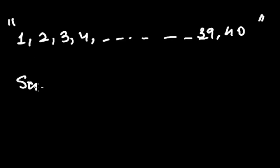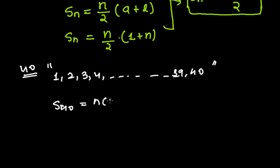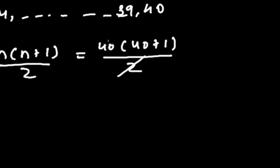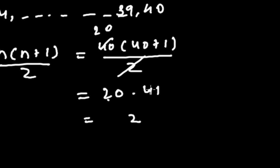To find this, simply apply: S(40) equals n times (n plus 1) divided by 2. Here n equals 40, so that is 40 times 41 divided by 2. Dividing 40 by 2 gives 20, and 20 times 41 equals 820. So the sum of all numbers from 1 to 40 is 820.